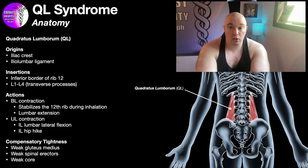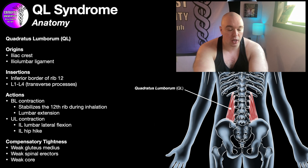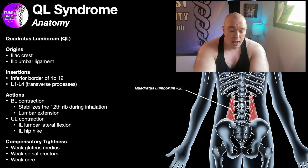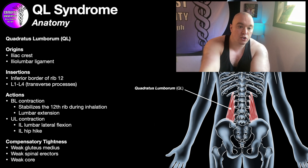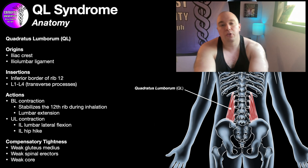Before we get into specific treatments for this condition, we need to have an understanding of the anatomy so we know where the muscle is and how to accurately diagnose it. The origins of this muscle are on the inferior side — it originates off of the superior aspect of the posterior iliac crest and also off the iliolumbar ligament. The fibers generally run vertically and insert on the inferior border of the 12th rib, which is one of the floating ribs, and also on the transverse processes of L1 through L4.